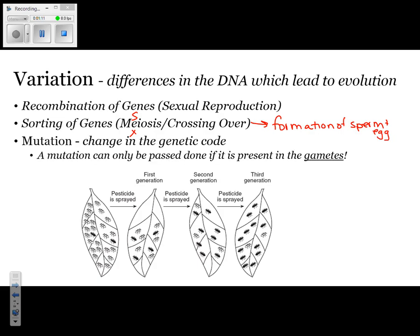The final way to get variation in your DNA is through mutation. We typically think of a mutation as being bad, when in fact mutations can be good. Mutations are whenever there is a change in the genetic code. Remember, the genetic code is represented by A, T, C, and G. Even just one letter change could result in a mutation.